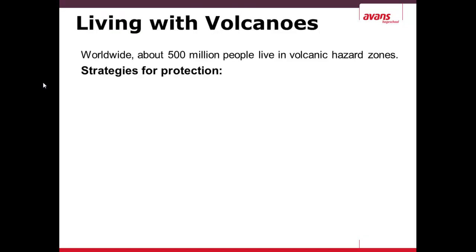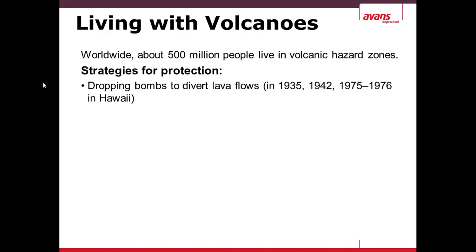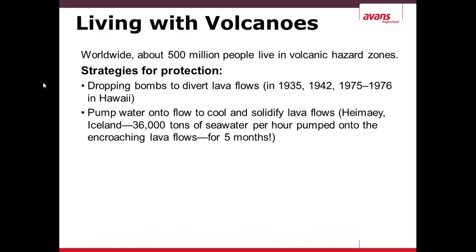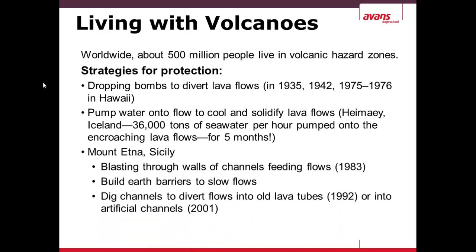Worldwide, it is estimated that more than 500 million people are living in volcanic hazard zones, including large cities in Japan and North America. Strategies to manage lava include dropping bombs to deflect lava flows, pumping water directly onto lava flows (as was done for over five months in Iceland), and as at Mount Etna, blasting walls and digging out lava tubes to create artificial channels for the magma to flow into.